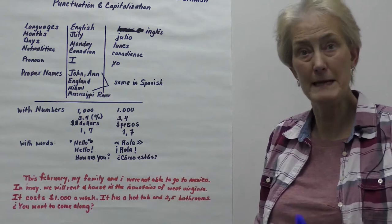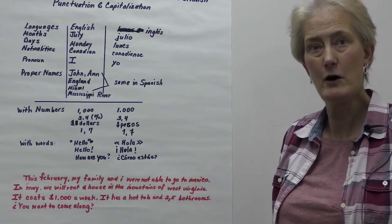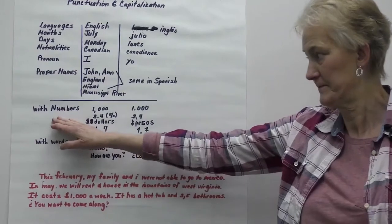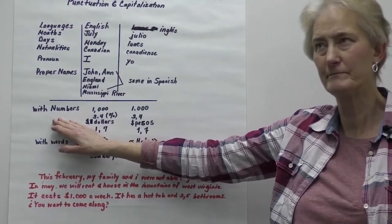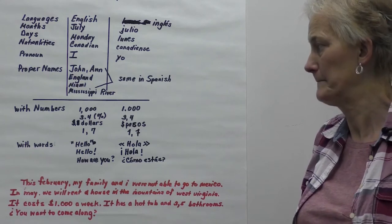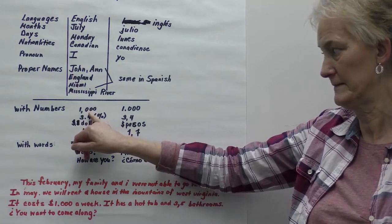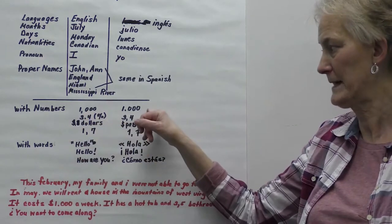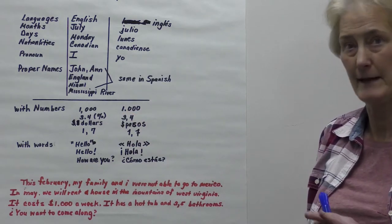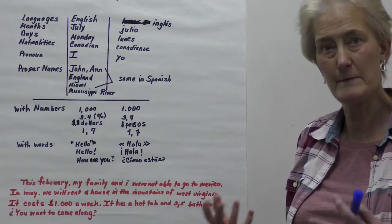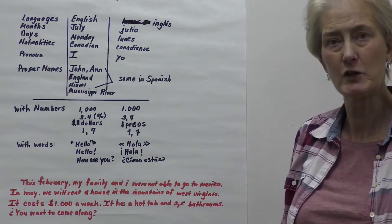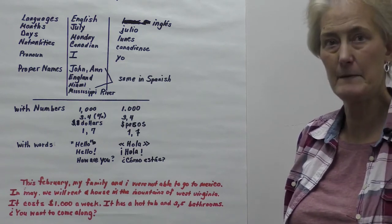With numbers, we have some unusual markings. When we say 1,000, we put a comma. When Spanish speakers say 1,000, or 'mil,' it's a decimal point. That only works with numbers. When you're talking about written words or sentences, commas and periods are the same in both languages.